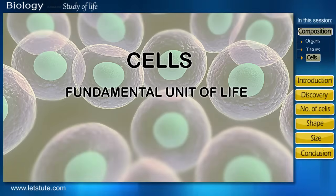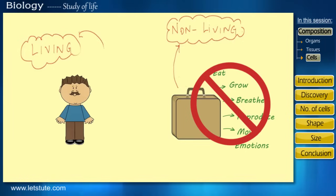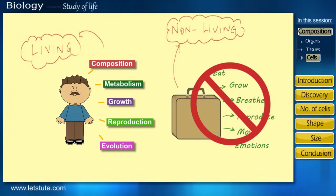Cells: the fundamental unit of life. If you remember in our previous session, we've seen the basic difference between a living and a non-living thing, and we've also seen some of the characteristics shown by a living organism. Today we'll be looking at the first characteristic in detail, which is the composition of an organism.